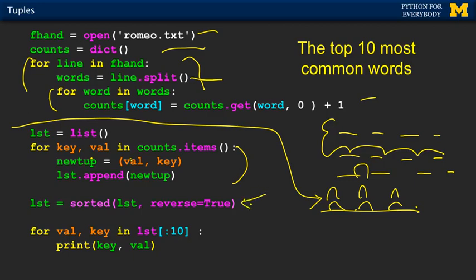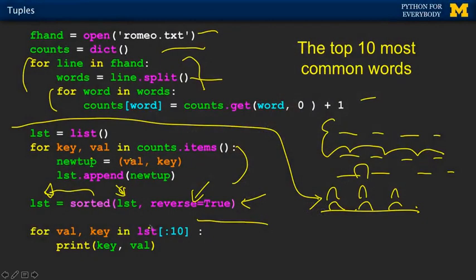Now we sort that backwards — the value-key tuples go backwards. We reassign the sorted result back into the list variable. When this is done, it will be sorted from the highest value down to the lowest value. Now we have to do two things: look for the top ten, and flip them when we're printing. So this list is now backwards — it's v comma k, value comma key — and we're going to use list slicing.